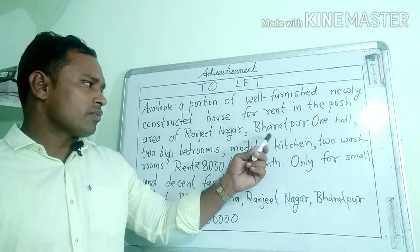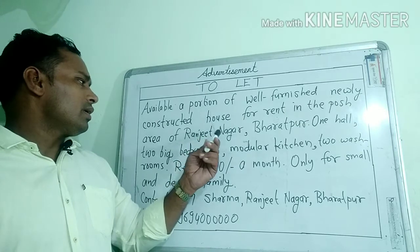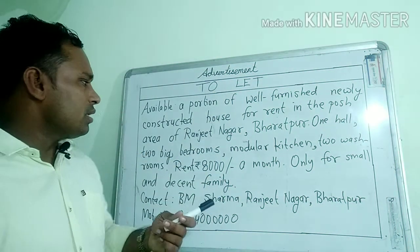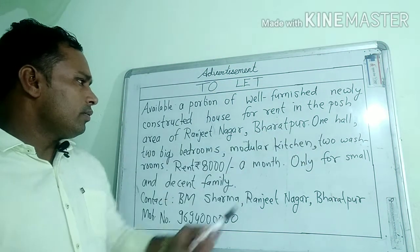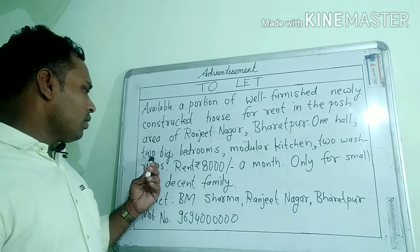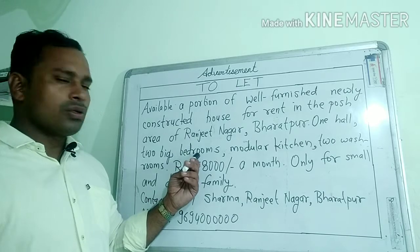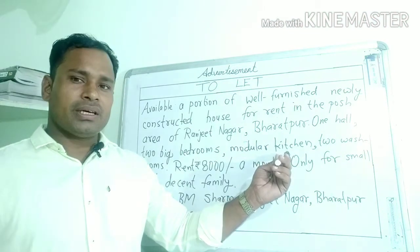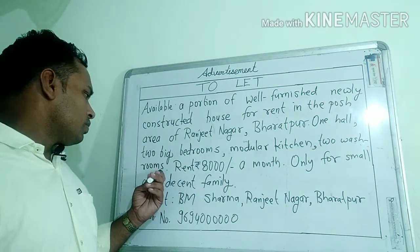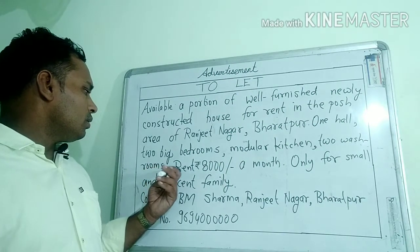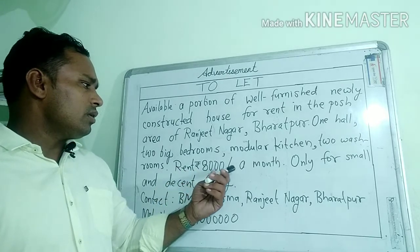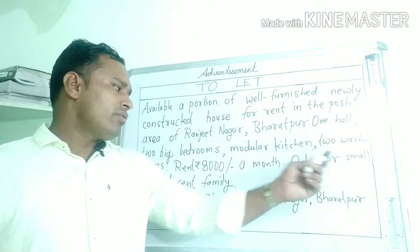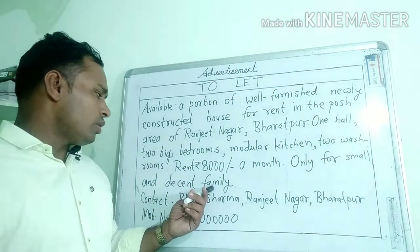यह posh area है Ranjit Nagar, Bharatpur — भरतपुर जिले के रंजीत नगर की एक शाही कॉलोनी में। इसमें one hall — एक बड़ा hall है, two big bedrooms — दो बड़े bedrooms हैं, modular kitchen — एक kitchen है, और two washrooms — दो washrooms हैं।